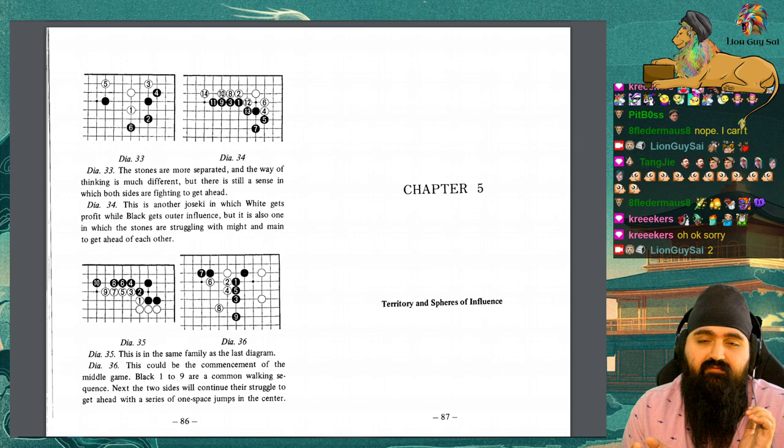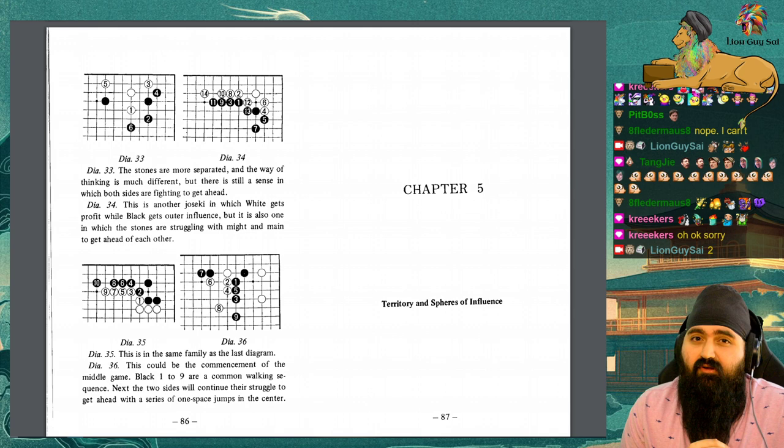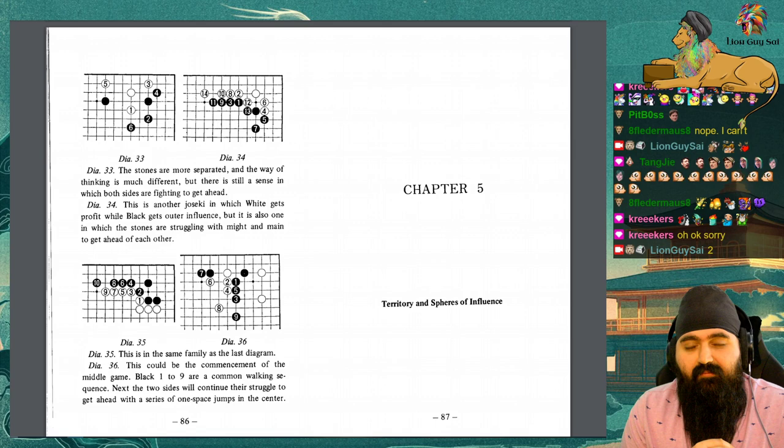It's about territory and spheres of influence. For those who see a framework and are like, oh no, that's gonna be my opponent's territory and I can't do anything about it, what should I do? This chapter is for you.